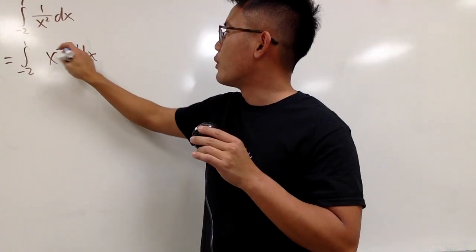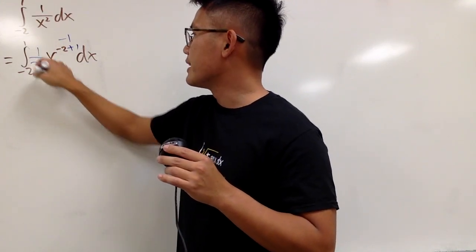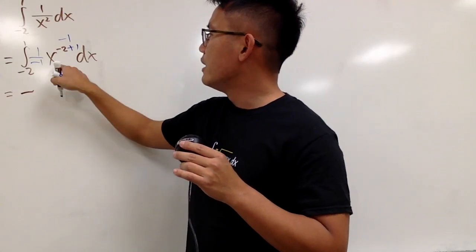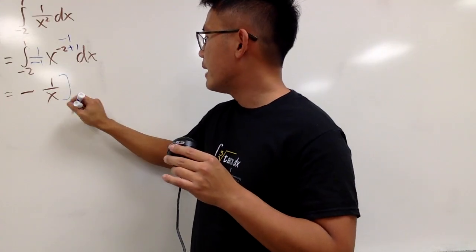So now let's add 1 to the power, and it becomes negative 1 divided by the new power. We get 1 over negative 1, and an antiderivative for that is negative x to the negative 1 power, which is 1 over x.